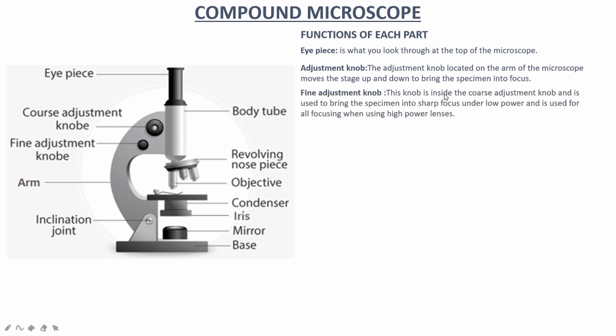The fine adjustment knob is located inside the coarse adjustment knob and is used to bring the specimen into sharp focus under low power and is used for all focusing when using high power lenses.